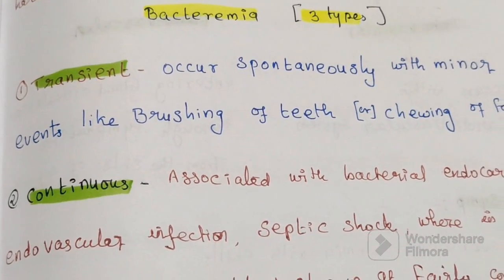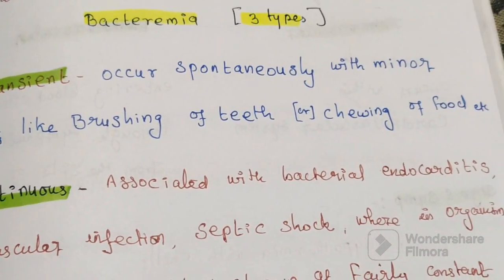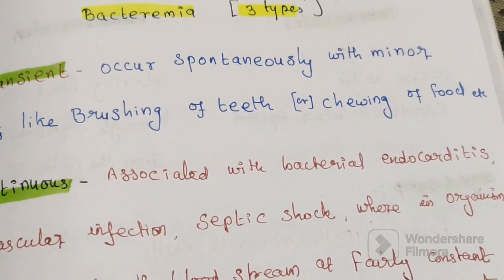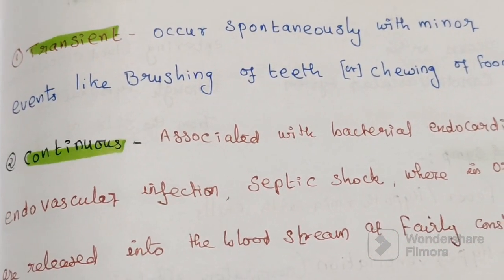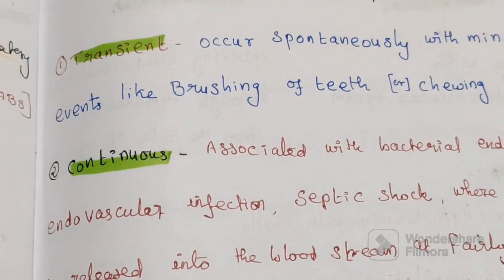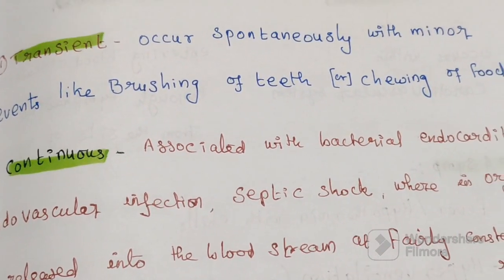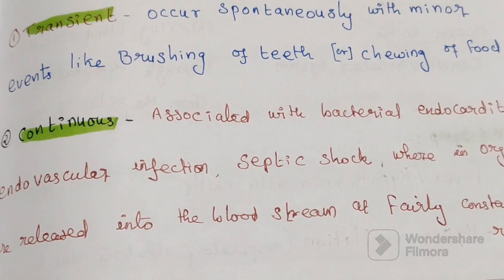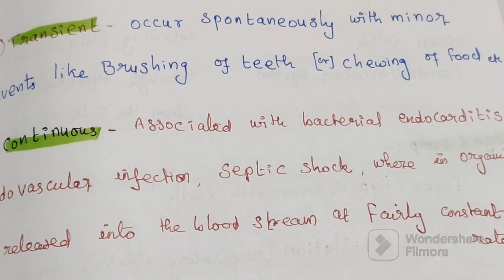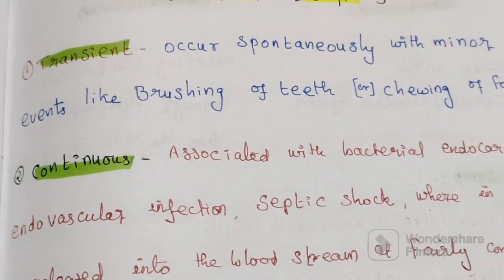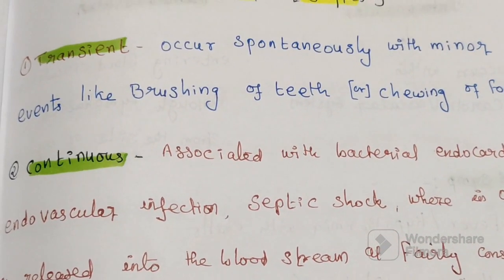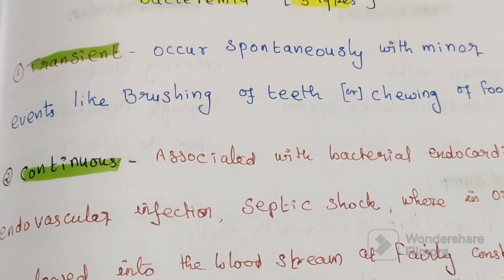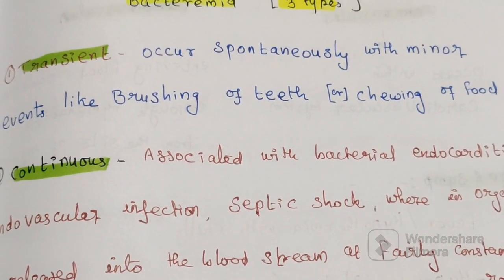The second type is continuous bacteremia. It is associated with bacterial endocarditis, endovascular infection, and septic shock, where organisms are released into the bloodstream at a fairly constant rate.